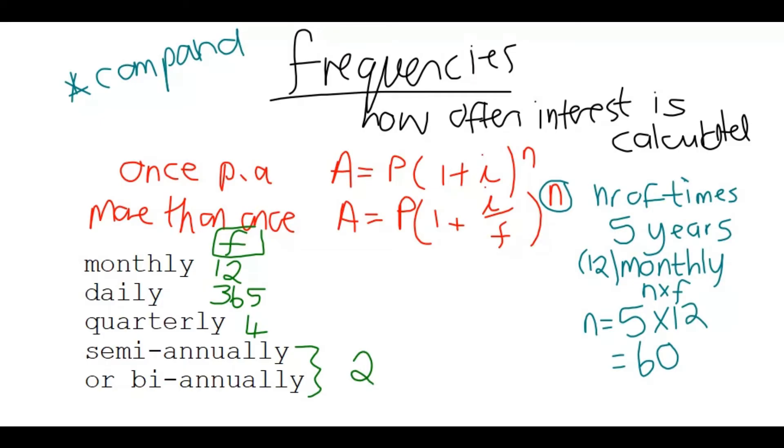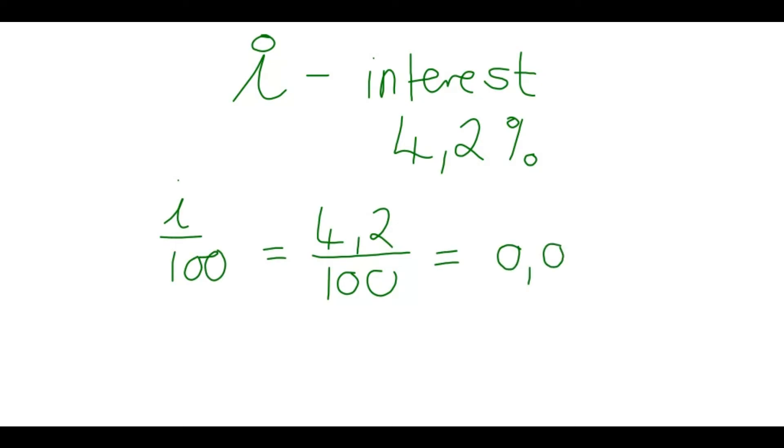And then there's one more thing we must look at, and that is the I in the formula. Now the I, we've said here, it's your interest. But you're going to find difficulty working your sums out if you say, for example, 4.2%. You can't use that 4.2%. You're going to have to say 4.2 divided by 100. So you have to divide your interest by 100, and then you work with a decimal. So 0.042. Always do this and work with a decimal amount.